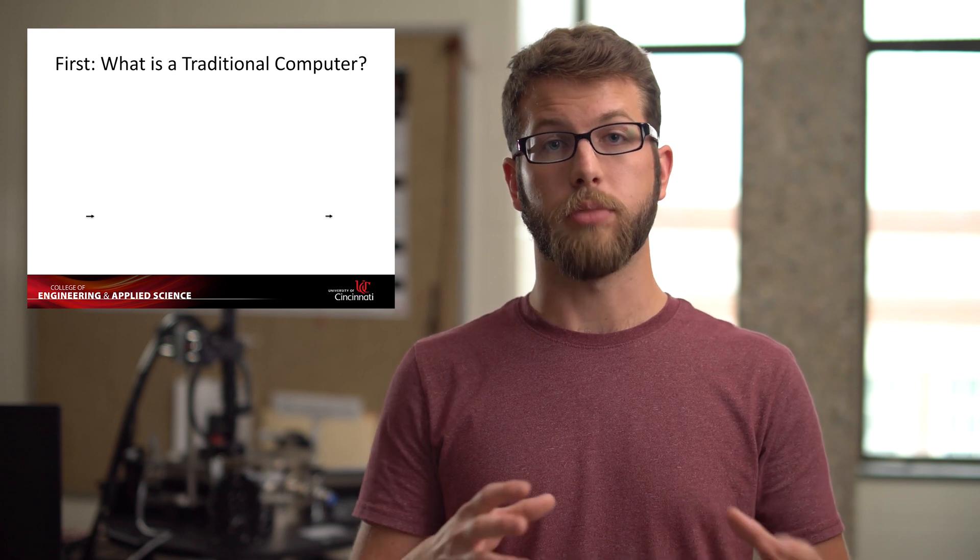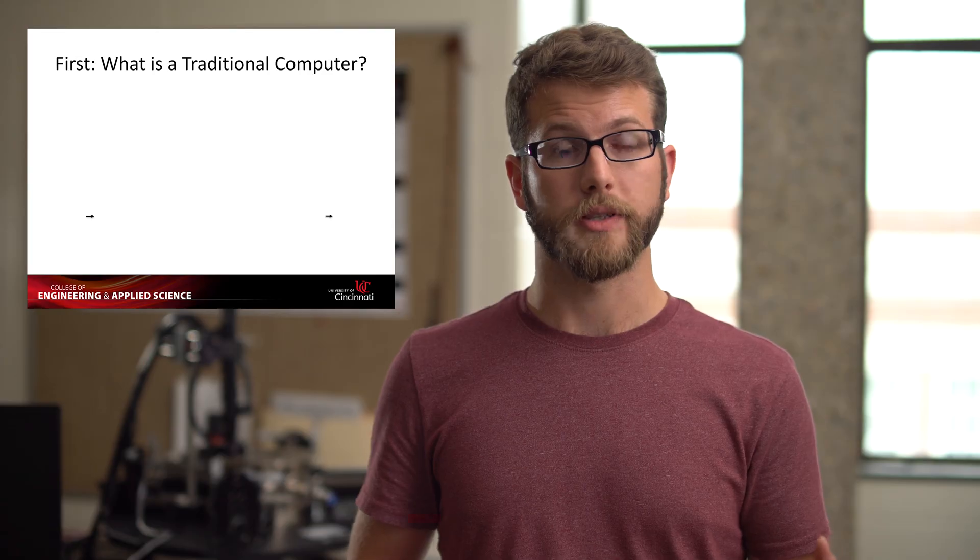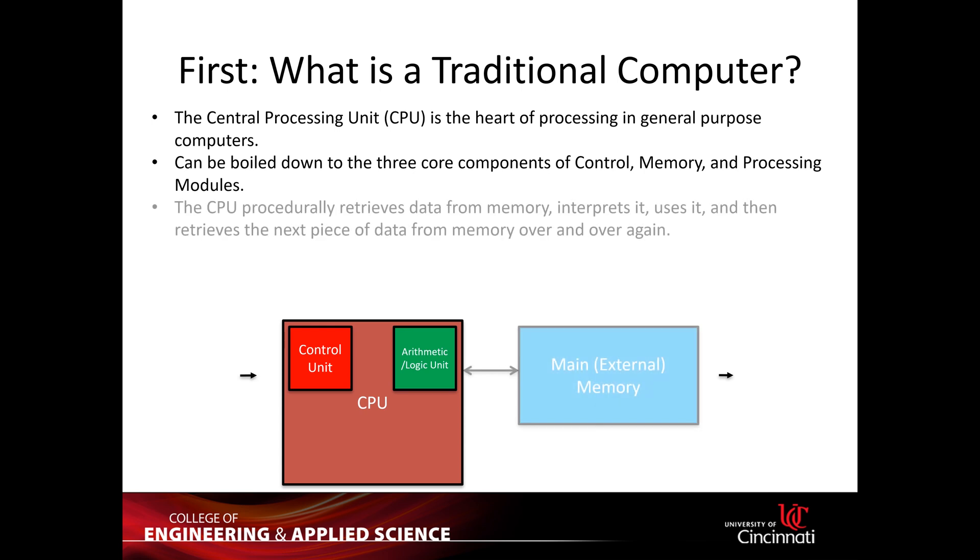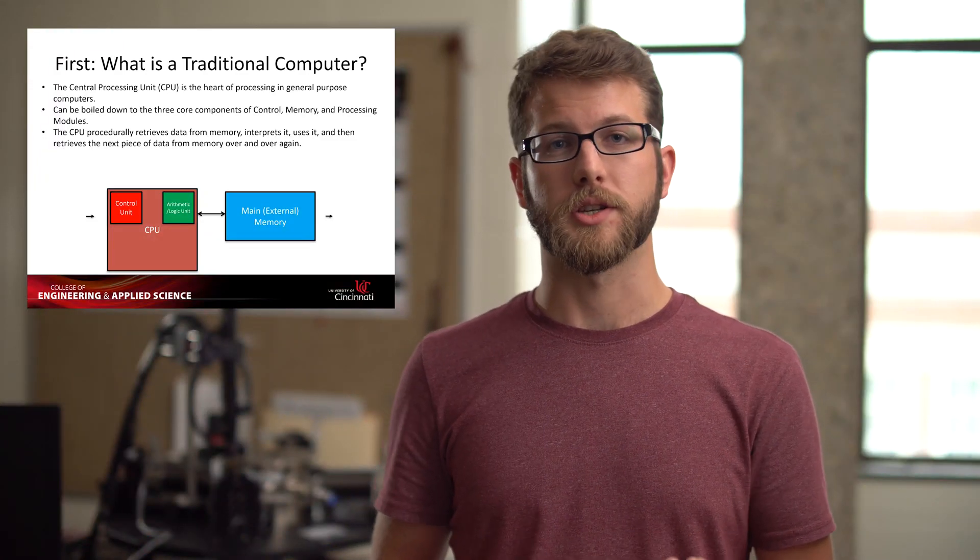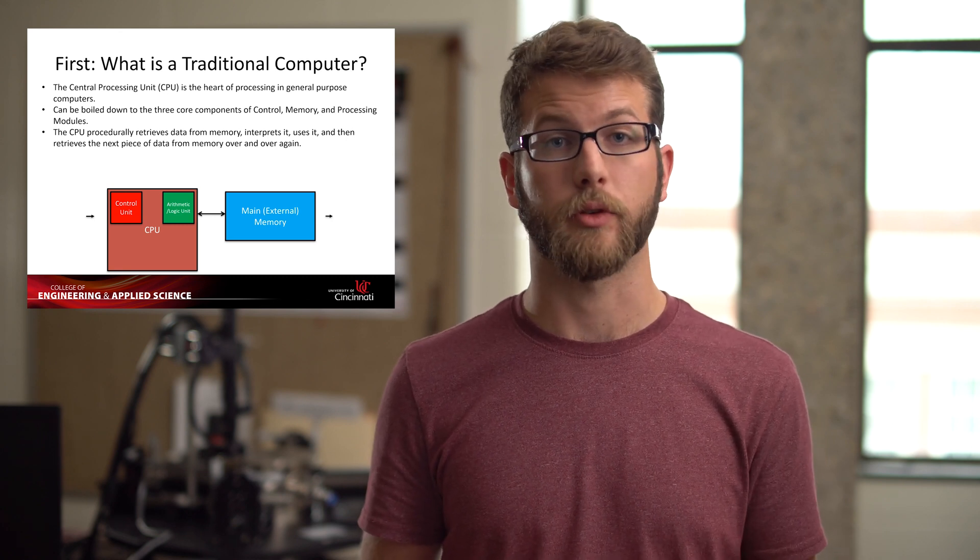So inside that black box, we have multiple different components that talk to each other. The key and core component is something called the central processing unit. That central processing unit talks to memory, what we're going to call main or external memory. This is information that is stored permanently in a mechanical hard drive or a solid state drive.